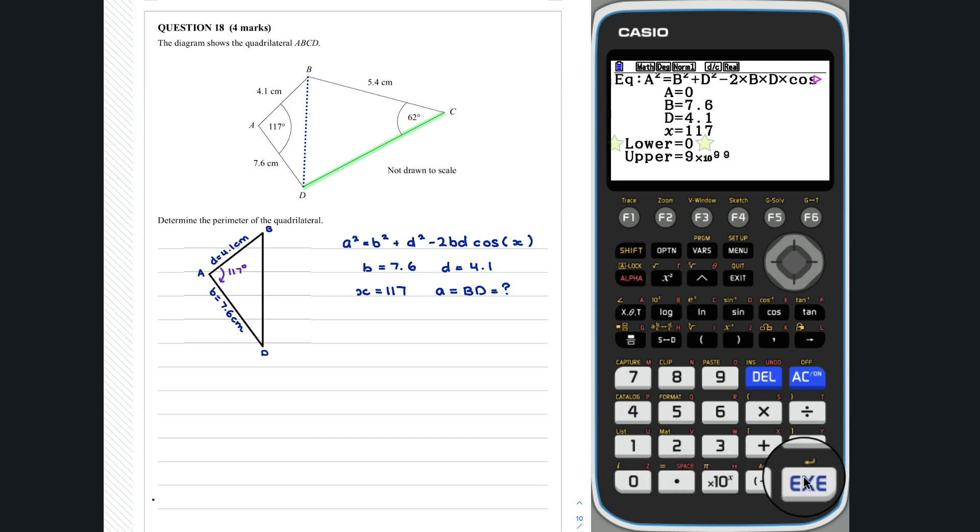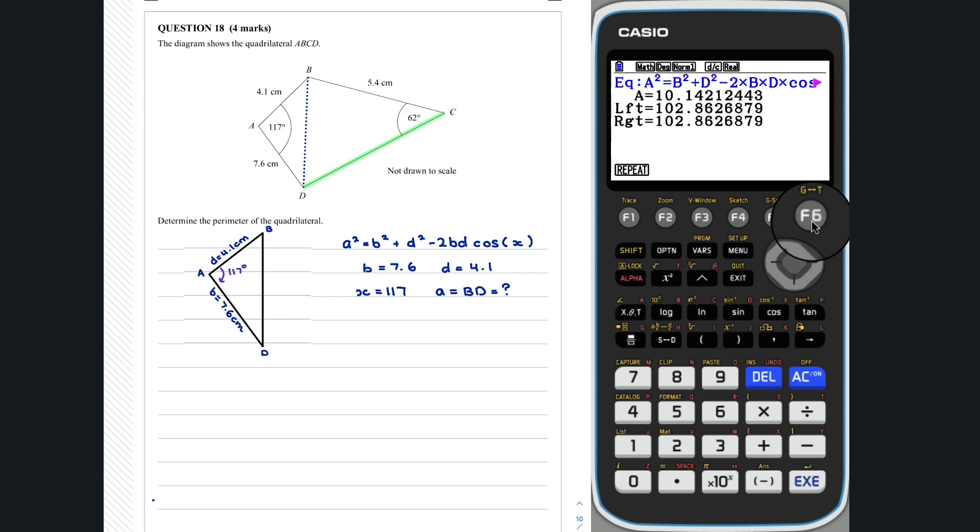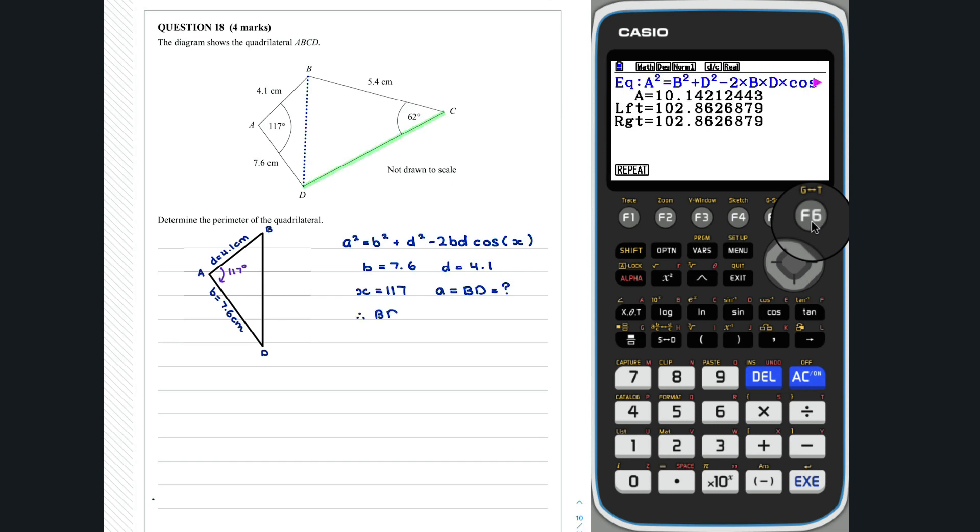Here, we have set the lower value equal to 0 as we cannot have a negative length. Therefore, BD was found to be 10.142 centimeters.